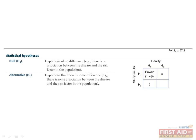Let's continue now with statistical hypotheses, which allow us to determine whether there is a statistically significant difference between two groups. The null hypothesis is the hypothesis of no difference. For example, a medically relevant null hypothesis could be that there is no association between a disease and the risk factor of interest in the population. The alternative hypothesis is the hypothesis that there is a difference, meaning there is some association between the disease and the risk factor in the population. One can create a new 2x2 table with the study results on the vertical axis and the reality of the results on the horizontal axis. Are you starting to see a theme here? When in doubt on a biostatistics question, draw a 2x2 table.